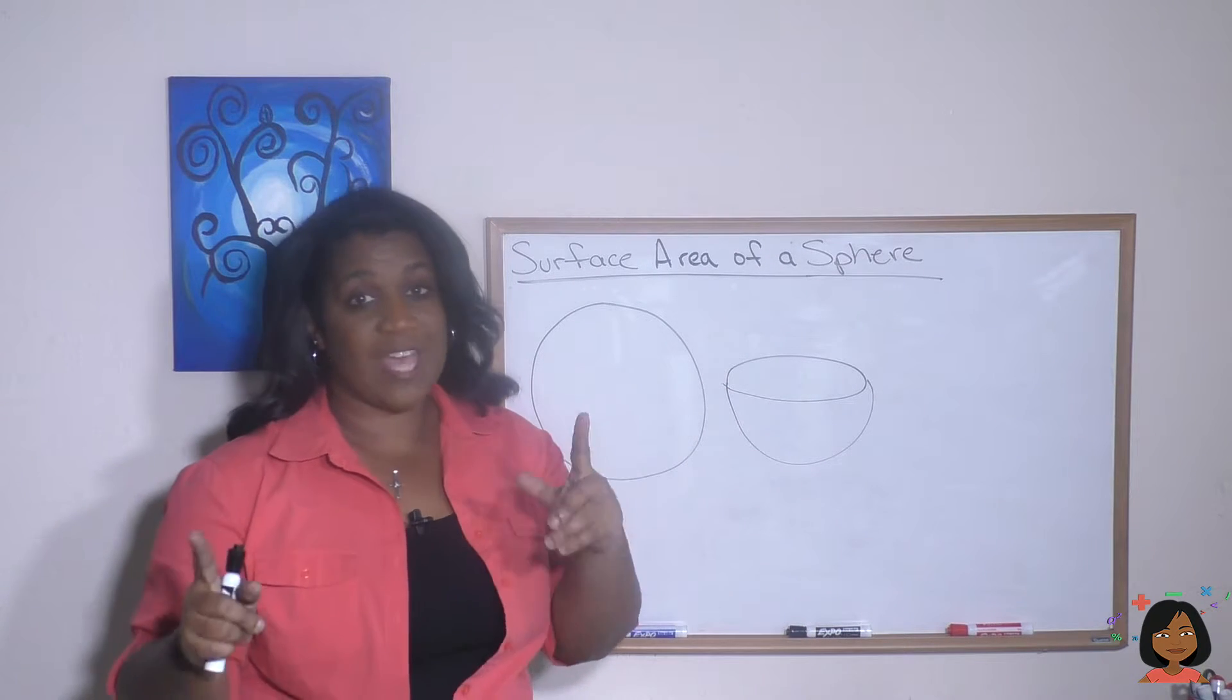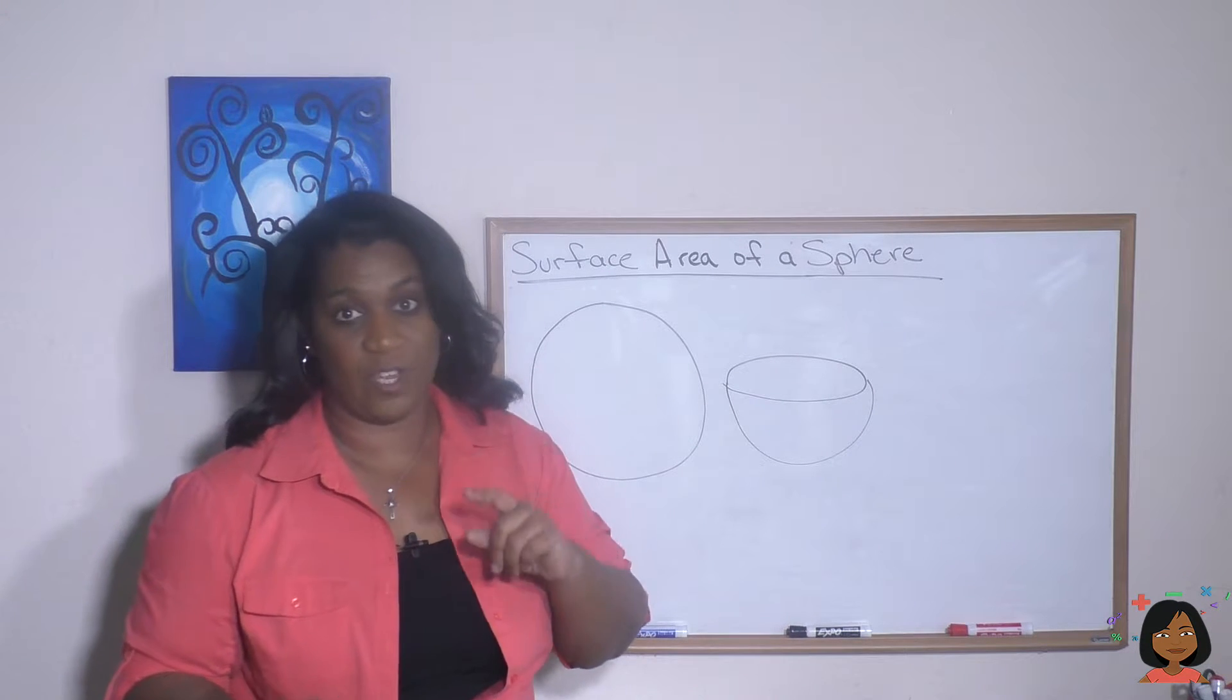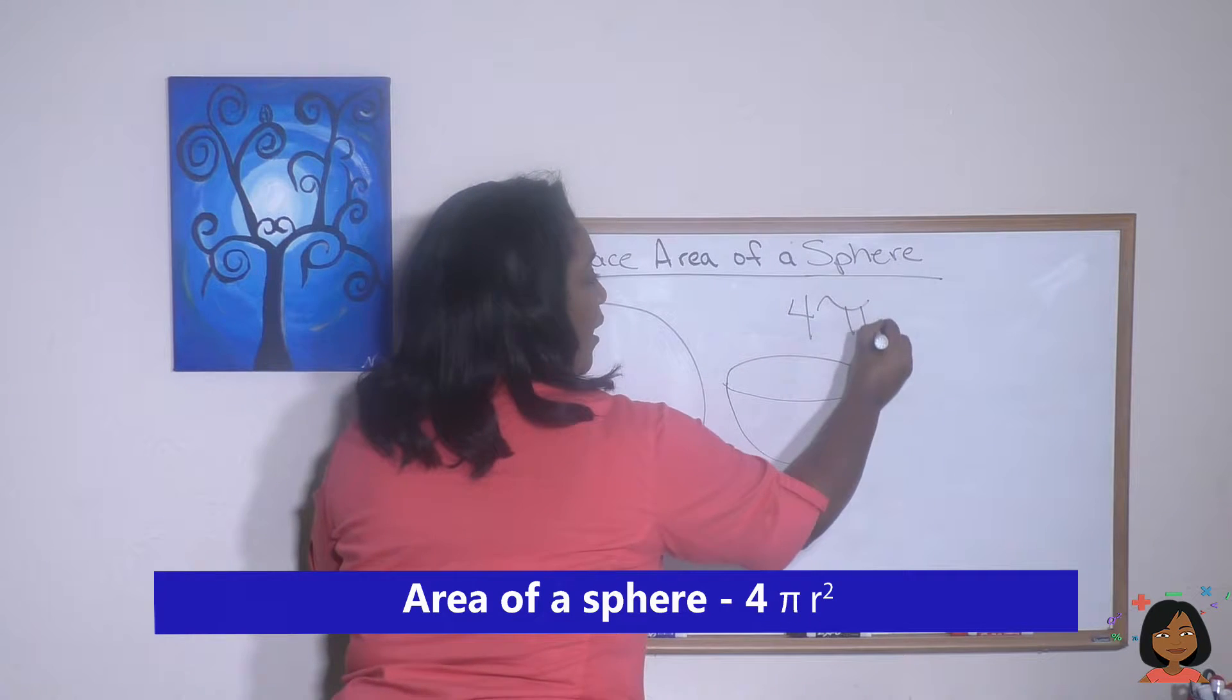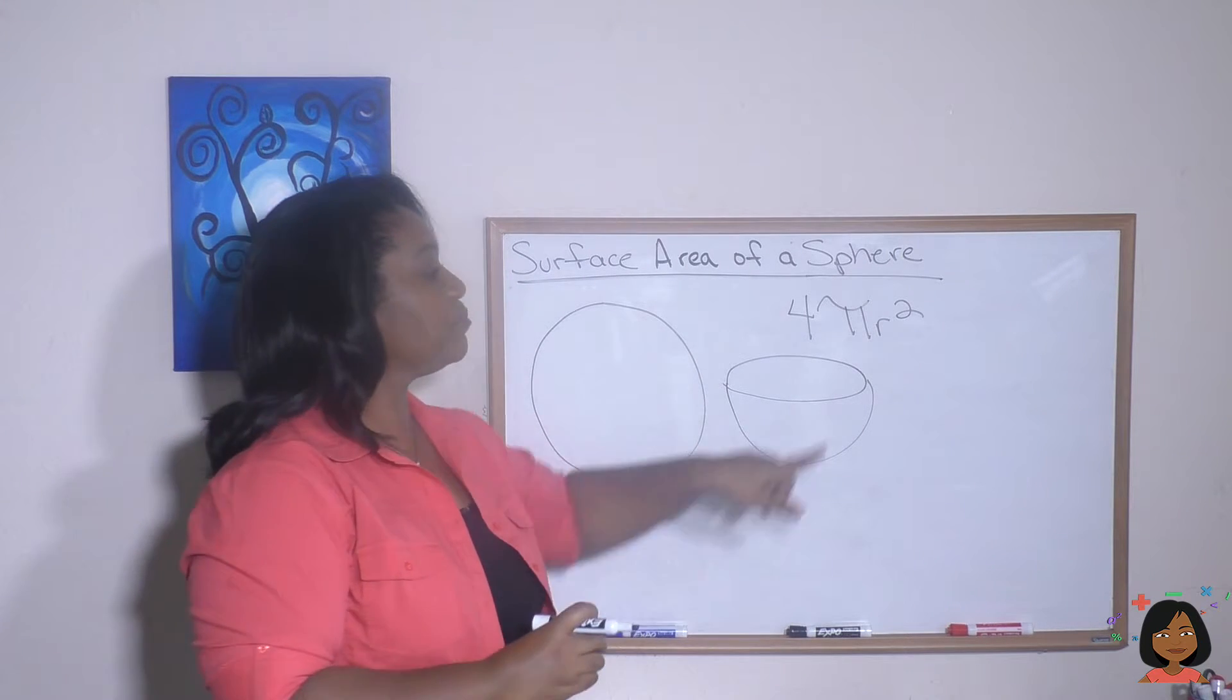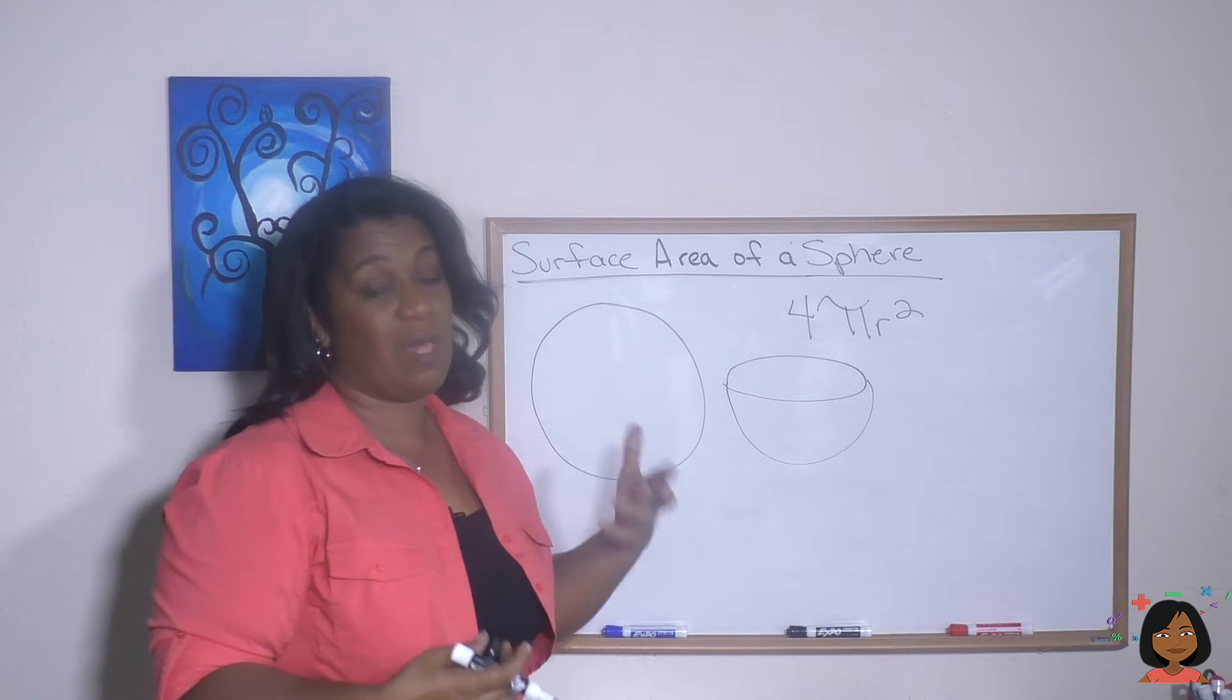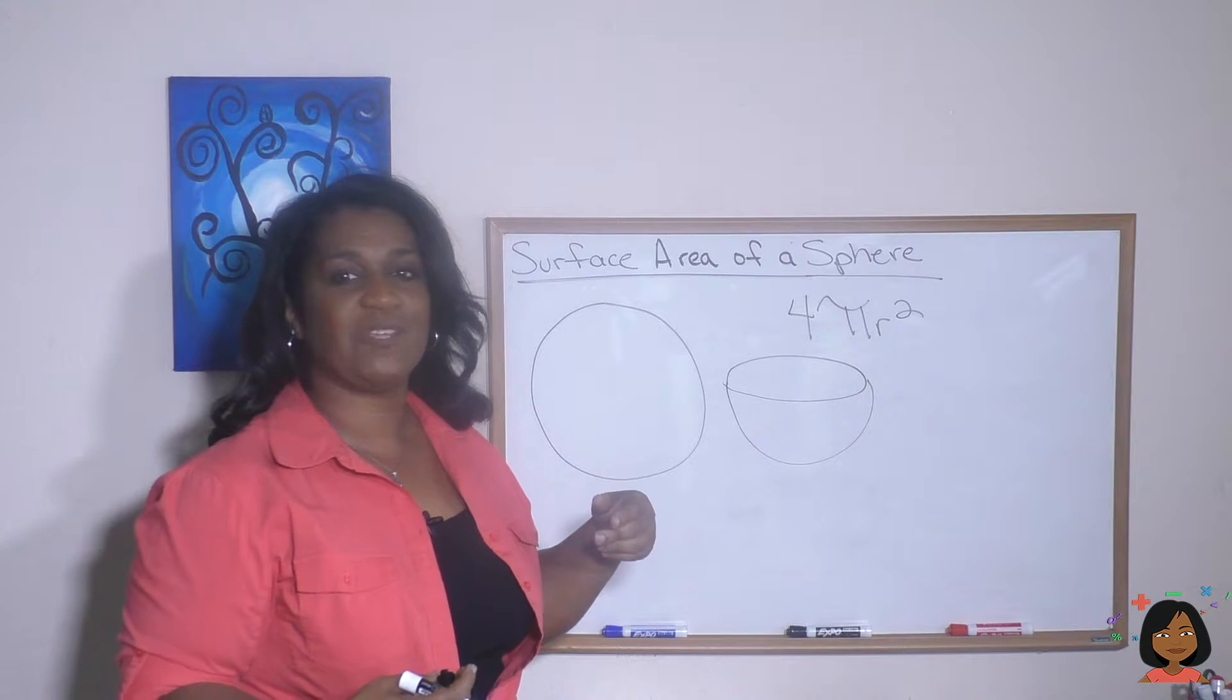Turns out there's a very specific formula to find the area for a sphere. It is four times pi r squared. Well, the pi r squared part should look familiar, right? Pi r squared is the area of a circle. We multiply that by four and we get the area of a sphere.